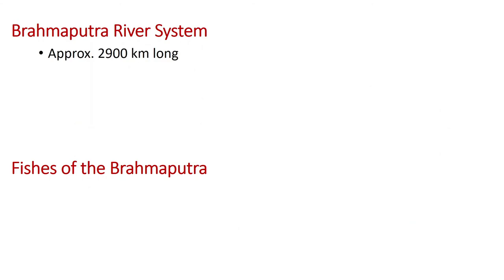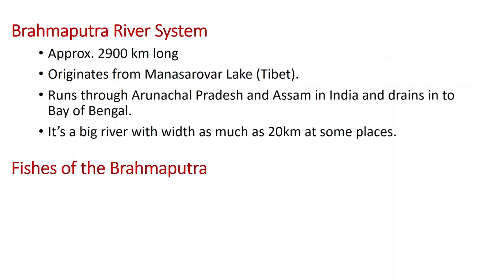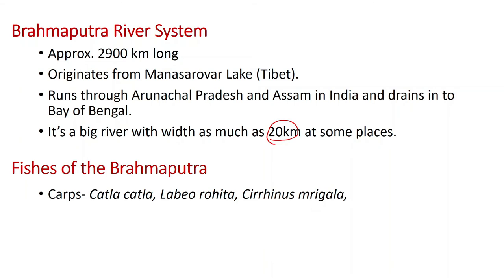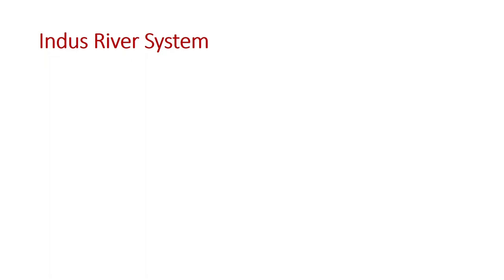The Brahmaputra river system is approximately 2,900 kilometers long. It originates from the Mansarovar lake in Tibet and runs through Arunachal Pradesh and Assam in India before draining into the Bay of Bengal. It is a very wide river — as wide as 20 kilometers at some places. The carps here are the same: Katla, Labeo rohita, Cirrhinus mrigala. Catfishes include Wallago attu and Mystus seenghala. Others include Channa marulius or striatus. Cold water fishes include the Mahseer.